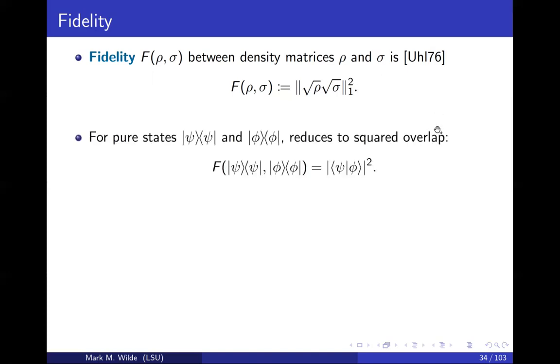If you input pure states, this reduces to the squared overlap or the squared inner product of the two vectors corresponding to the pure states. This kind of overlap appears a lot when you study quantum mechanics. And this has an interpretation as the probability that the state phi would pass a test for being in the state psi. And the test would be the measurement with measurement operators psi or identity minus psi. That's the interpretation of fidelity.